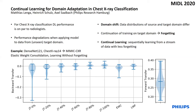Nowadays, large databases containing chest X-ray images with annotations are available, which allow training deep learning based classification models that offer performance on par with radiologists, at least for certain tasks. However, it has been observed that when applying such a model to data from another domain, the model performance severely degrades. The key underlying reason is a shift in the data distributions between different domains.